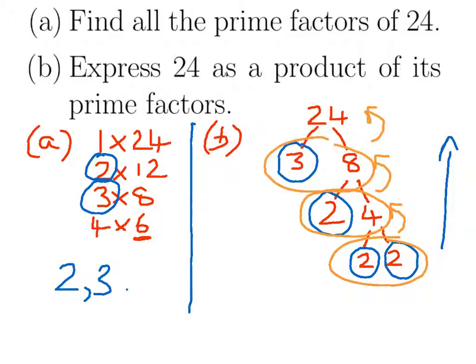Overall, we can say that 24 is equal to 2 times 2 times 2 times 3. We're done - we've written 24 as a product of its prime factors.